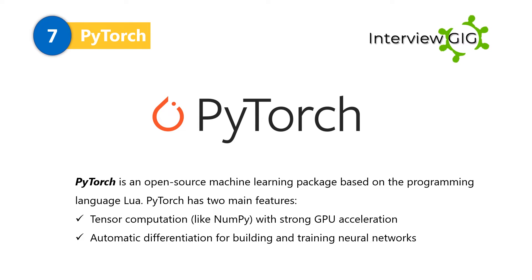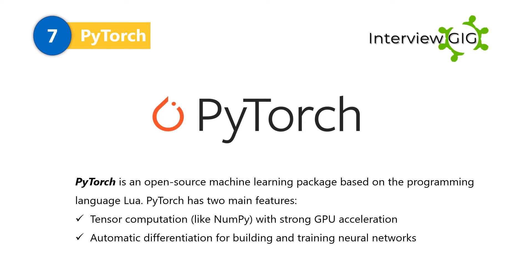PyTorch is an open source machine learning package based on the programming language Lua. PyTorch has two main features: tensor computation like NumPy with strong GPU acceleration, and automatic differentiation for building and training neural networks.